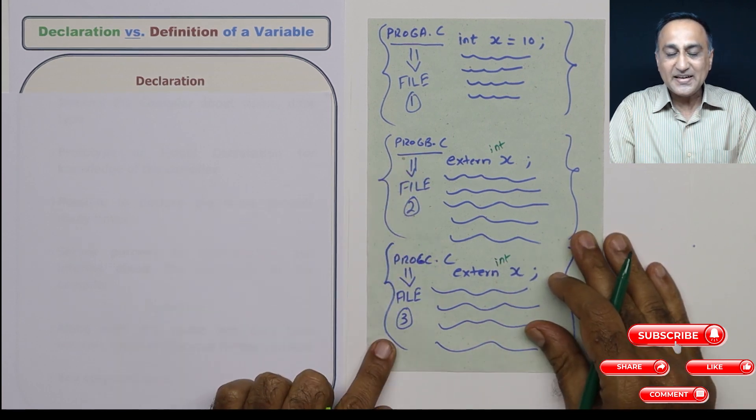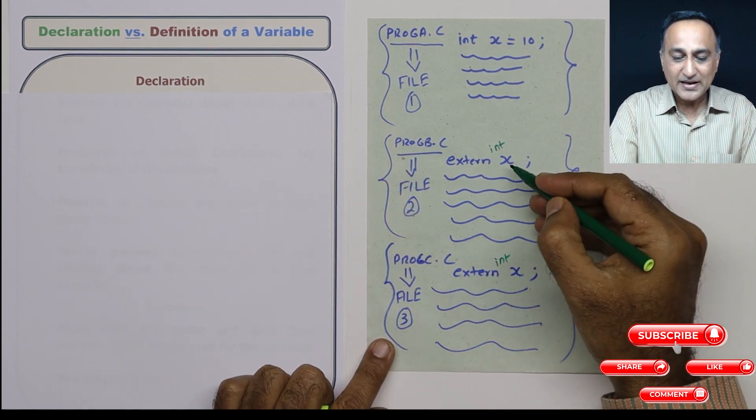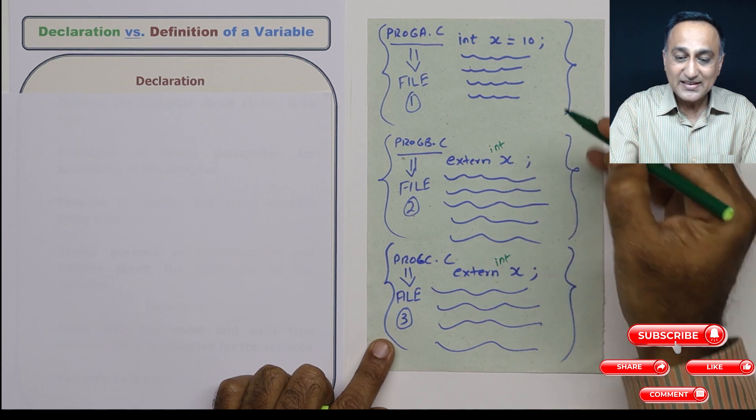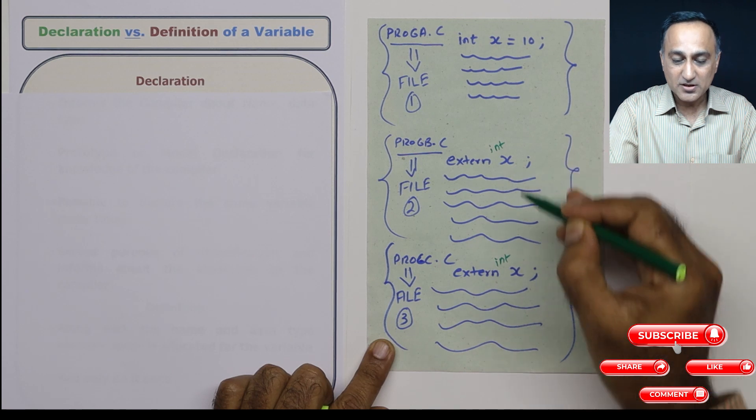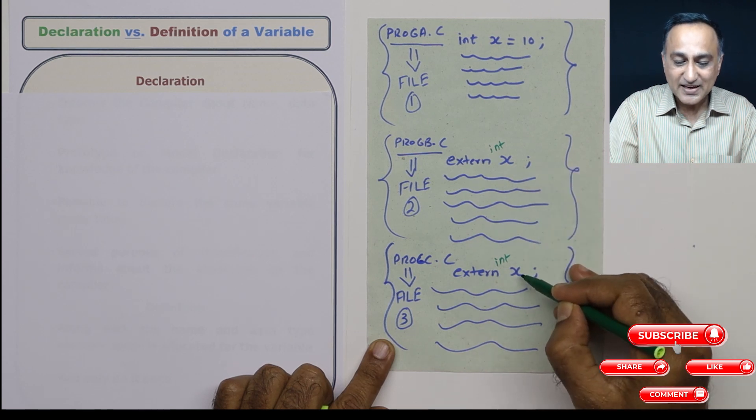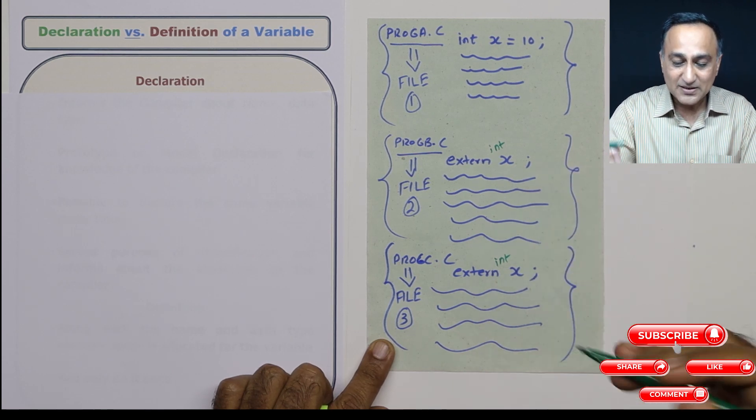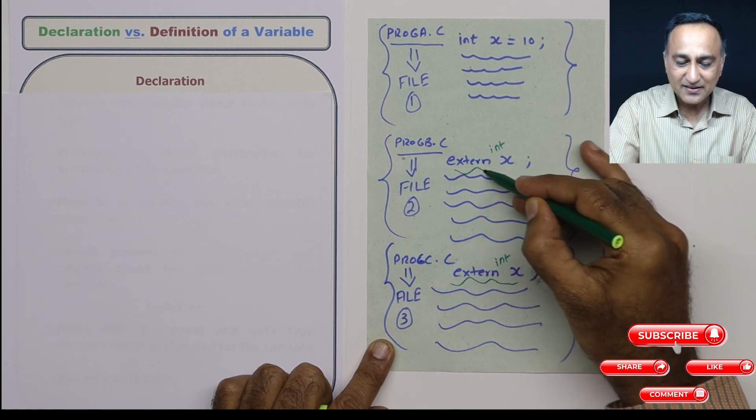So when it looks at extern int x, the compiler knows that this particular x is defined somewhere and it is just being used here. Similarly, when it comes here, it knows this x is defined somewhere and I'm merely declaring it here.